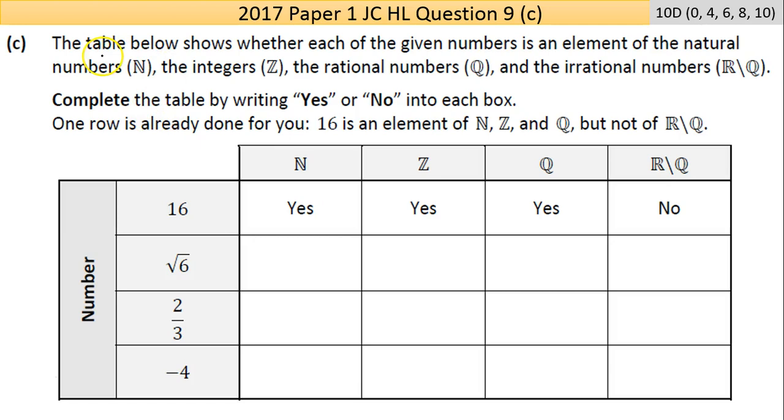The table below shows whether each of the given numbers is an element of the natural numbers (N), positive whole numbers not including zero; the integers (Z), positive or negative whole numbers including zero; the rational numbers (Q), which are fractions; and the irrational numbers (R\Q), which are things like square root of 2 or pi. Complete the table by writing yes or no into each box. One row is already done for you: 16 is natural, integer, rational, but not irrational.